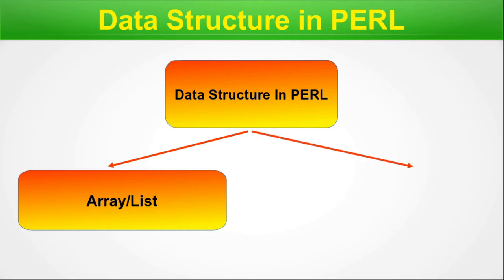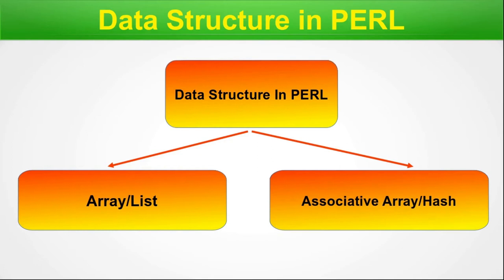The other data structure is associative array or hash. It is more like a hash table from general data structures — a map where a key and its corresponding value are mapped. That is called an associative array. In today's episode we will mostly discuss the array or list; in the next episode we will explore the associative array or hash.